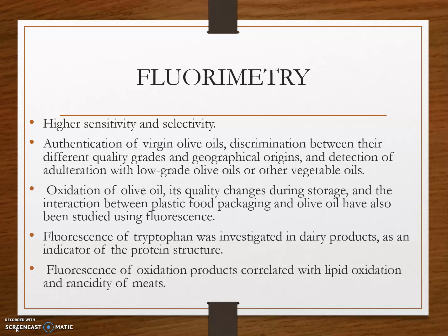The fluorescence property can be observed in organic aromatic compounds which have double bonds and rigid molecular skeletons. Food-relevant fluorescent compounds include aromatic acids, vitamins, cofactors, nucleic acids, porphyrins, polyphenols, alkaloids, etc.